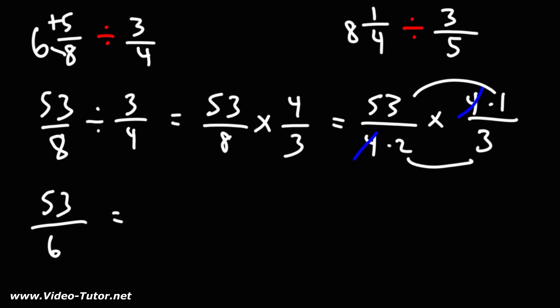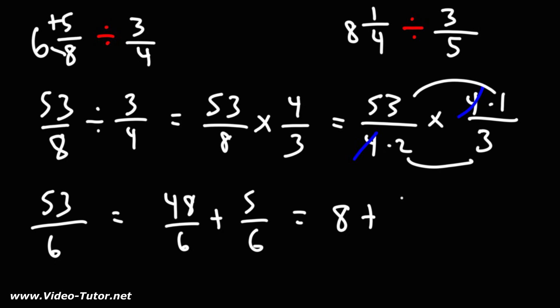And we could convert that back to a mixed number. The highest multiple of 6 just under 53 is 48, and 53 minus 48 is 5. So we could break up 53 over 6 into 48 over 6 and 5 over 6. 48 divided by 6 is 8, plus 5 over 6. So we have a whole number plus a fraction, and we can write that as the mixed number 8 and 5 sixths.